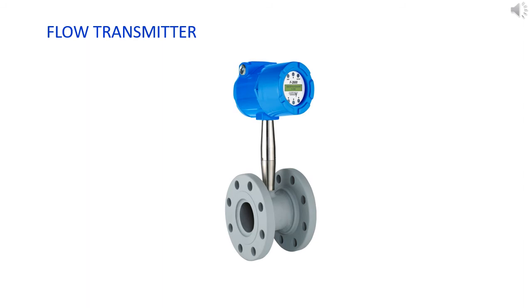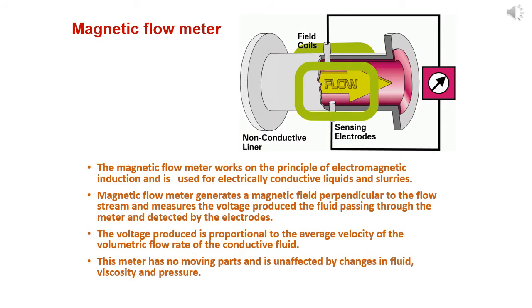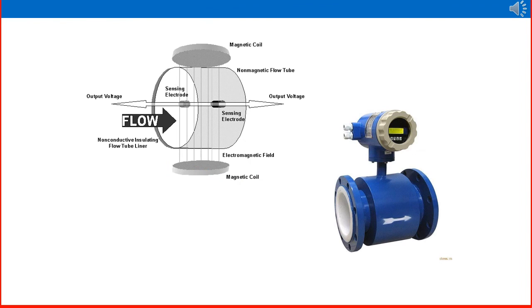Another type of flow meter is the magnetic flow meter. Magnetic flow meters work on the principle of electromagnetic induction and are used for electrically conductive liquids and slurries. The magnetic flow meter generates a magnetic field perpendicular to the flow stream and measures the voltage produced by the fluid passing through the meter, detected by electrodes. The voltage produced is proportional to the average velocity or the volumetric flow rate of the conductive fluid. The meter has no moving parts and is unaffected by changes in fluid viscosity and pressure.